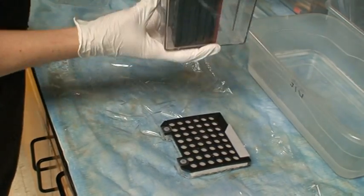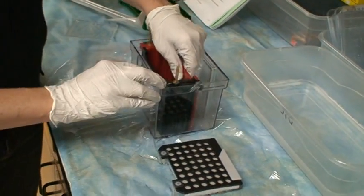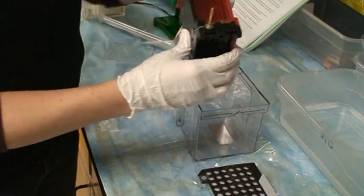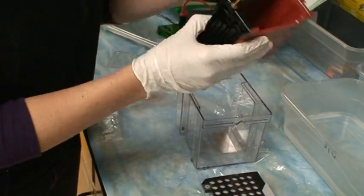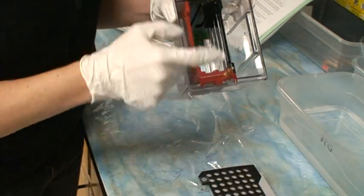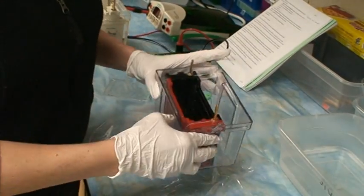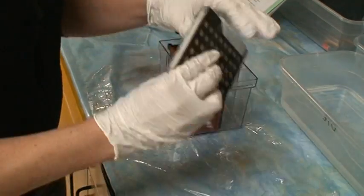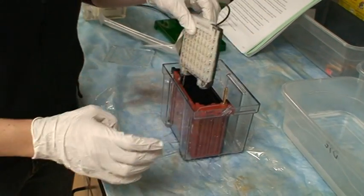You then take your transfer box with our transfer insert. You want to put it together such that these prongs are in the middle of the box. And then black goes to black and clear goes to red.